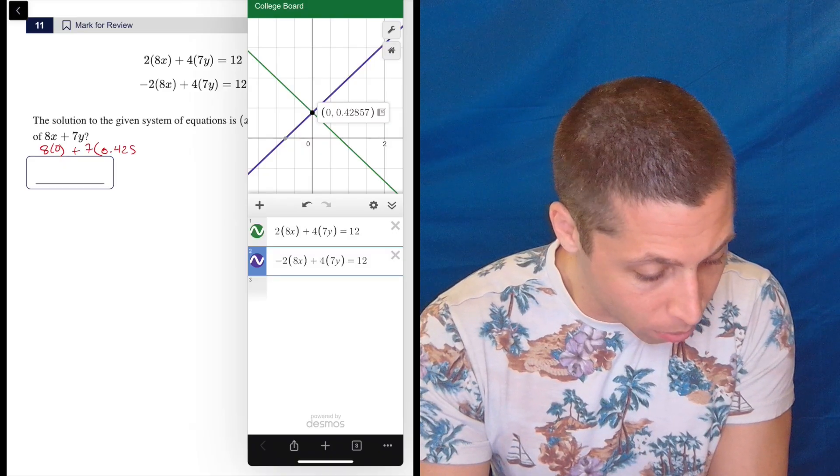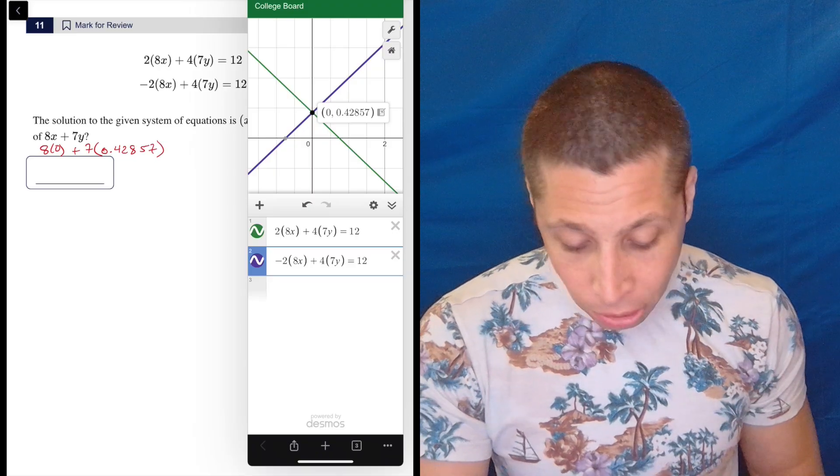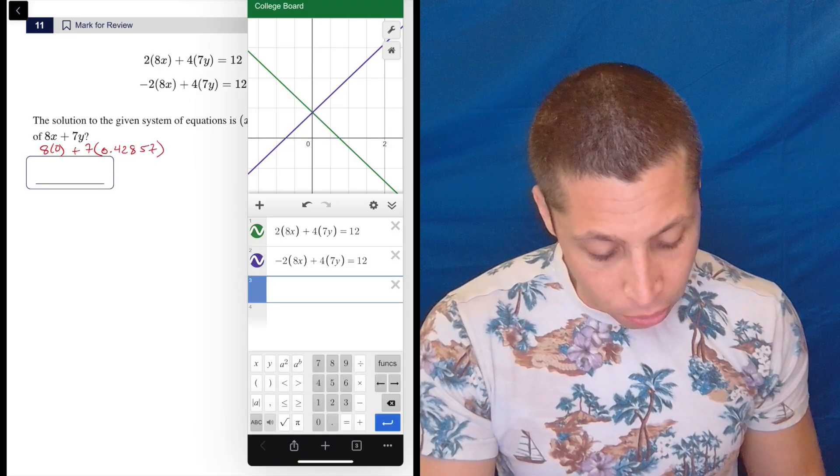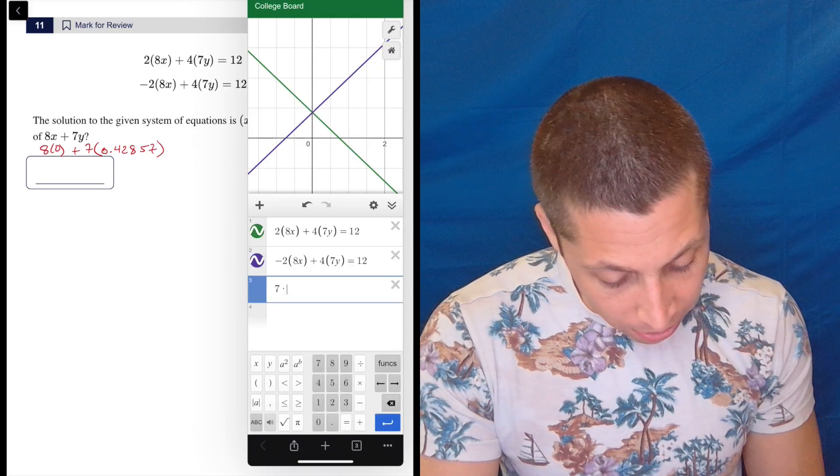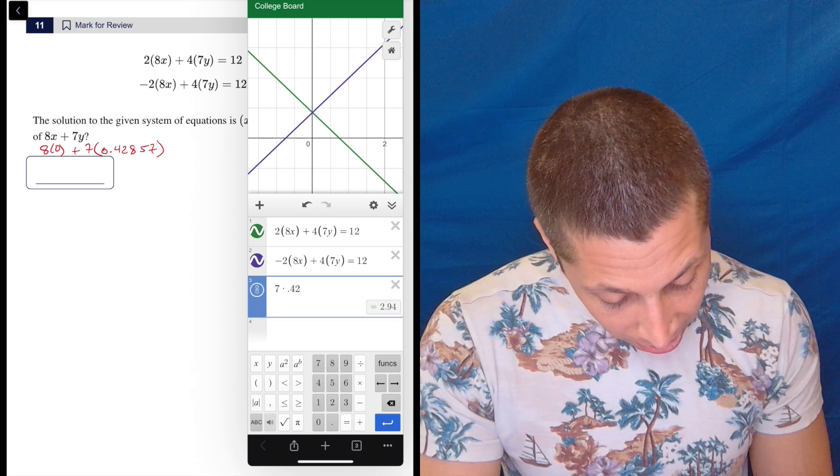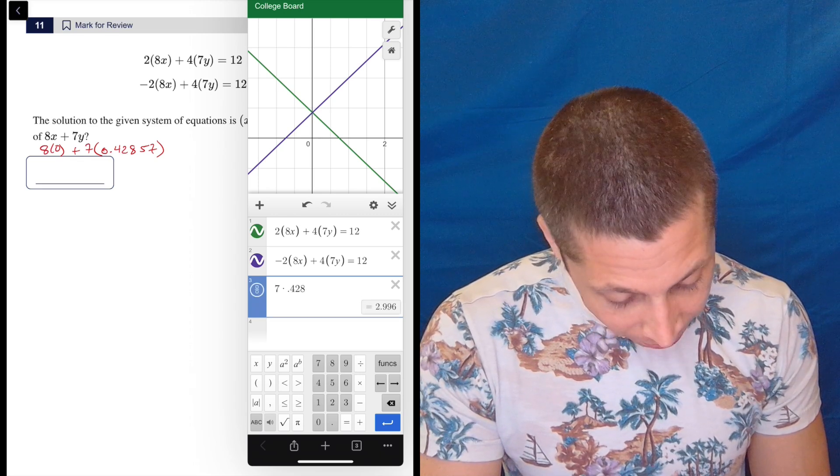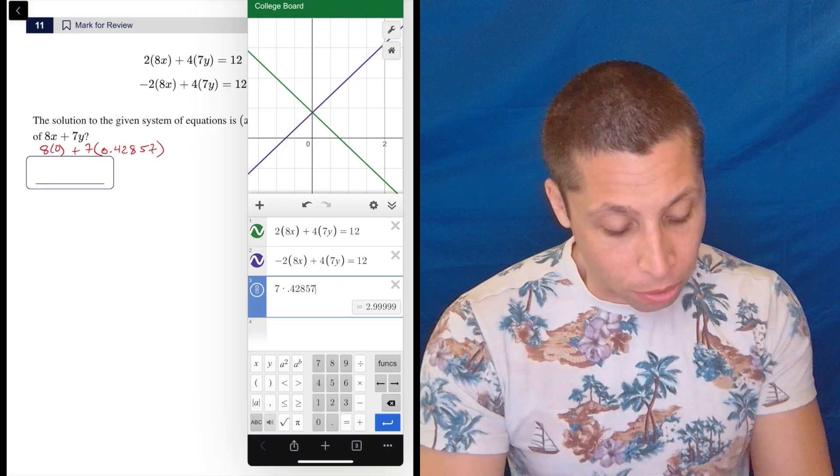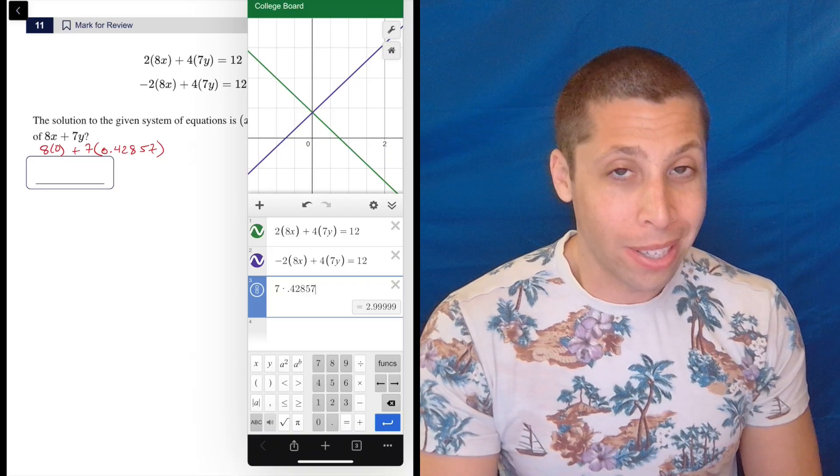Zero point four two eight five seven. That should get me the whole thing. So I can even just do that in Desmos. So seven times point four two eight five seven. See, this is why I wrote it down is I know that when you type, it goes away.